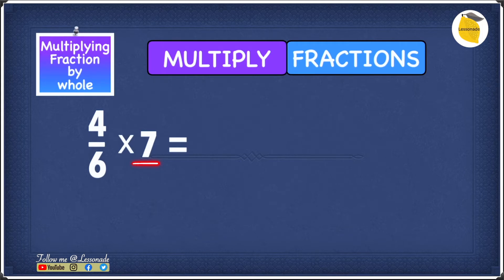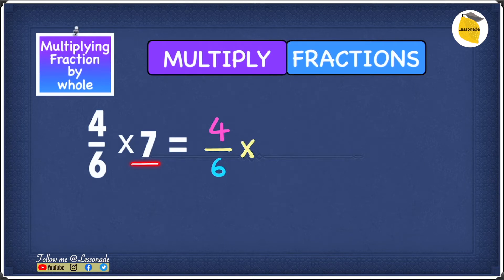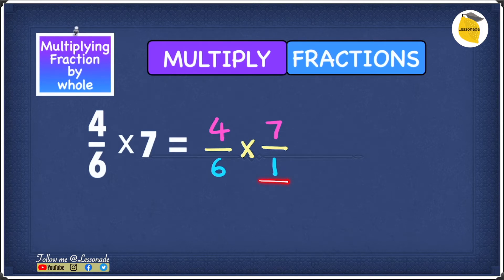Let's rewrite the question: write 4 over 6 then the times symbol. To write 7 as a fraction, you write the whole number as the numerator — so 7 goes on top — and then write 1 as the denominator. This works for any whole number: write the number at the top and put 1 in the denominator.